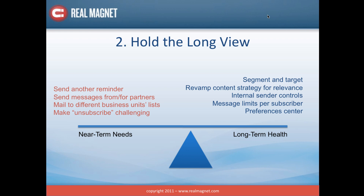Internal sender controls is another way organizations are limiting the opportunity that people within the organization have to send to lists they don't own. What happens occasionally is that if everybody has access to the email list, everybody will use it. And even though no one person may be over-mailing, the cumulative impact on your subscribers is that they're getting two, three, or four times as much email as any given person in the organization realizes. Message limits per subscriber is another way of achieving the same thing — you can limit the number of messages any individual subscriber receives to two or three messages per week.